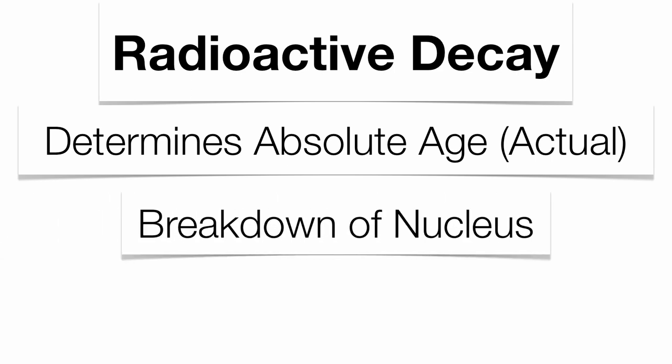Whenever the nucleus of an atom starts to break down, we say that it becomes radioactive. It starts giving off charged particles. We can measure the charged particles and figure out exactly how old that rock sample or fossil might actually be.